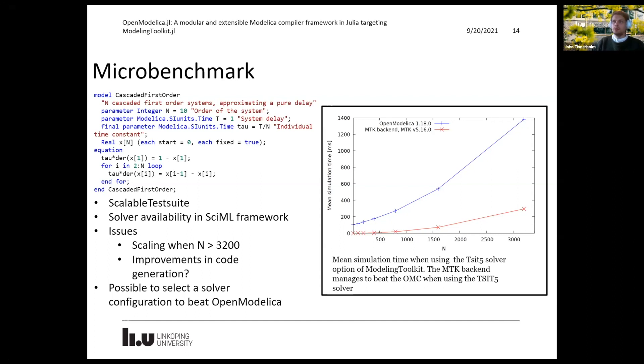And the issue seems to be that some operations in the symbolics did not seem to scale very well in version 5.16 of ModelingToolkit. Work is still ongoing and we plan to update the version used in the backend to 6.49, which is now the recent release.